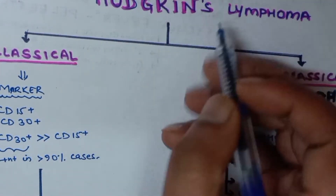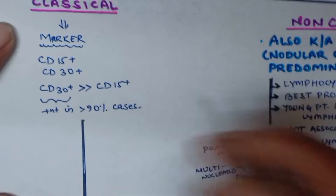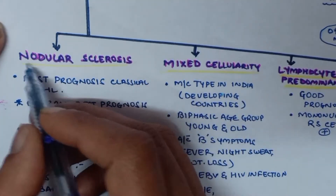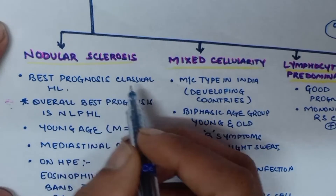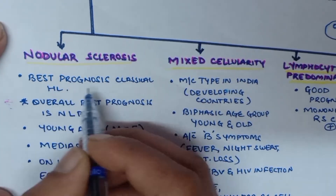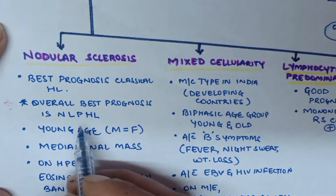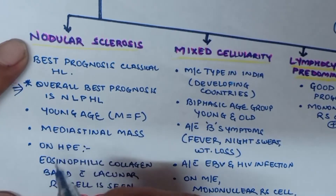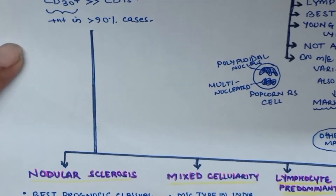Classical Hodgkin's lymphoma is classified into nodular sclerosis, mixed cellularity, lymphocyte predominant, and lymphocyte poor. The overall best prognosis is NLPHL — nodular lymphocytic predominant Hodgkin's lymphoma — which is the non-classical type. Among classical Hodgkin's lymphoma subtypes, nodular sclerosis has the best prognosis.